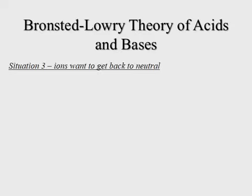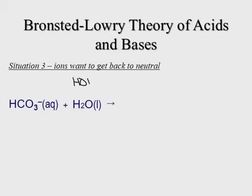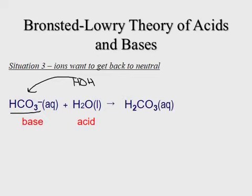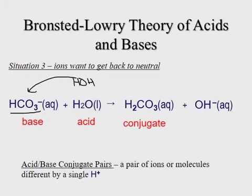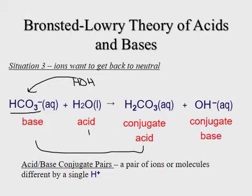In the third and final situation, we have an ion. Ions always want to return to neutral: positive ions want to lose a hydrogen, and negative ions want to gain one. Here we have HCO₃⁻, a negative ion, so it wants to gain a hydrogen from water (HOH). The H transfers to HCO₃⁻, making it carbonic acid (H₂CO₃), while what's left from water is OH⁻. HCO₃⁻ is the base and water is the acid, giving us two conjugate acid-base pairs.